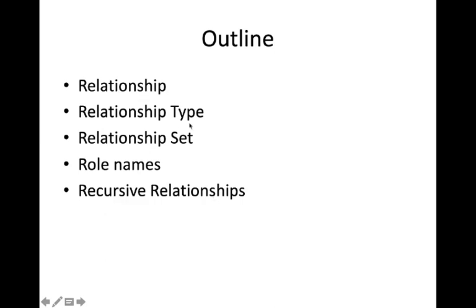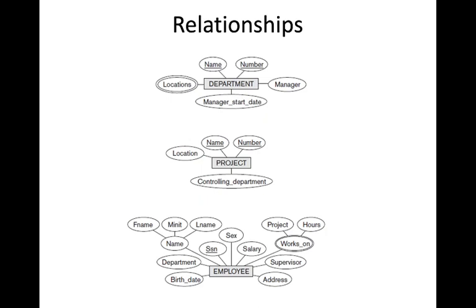We have already seen what is an entity, entity type, and entity set. Now we will see about relationship, relationship type, and relationship set. We have already designed different entities — department, project, employee — and drawn all the ER models. There is some relationship between all these things. If we take employee and department, they are related. If we take project and department, they are related because there is a controlling department for a project. Similarly, employee and project are related because an employee works on some project.